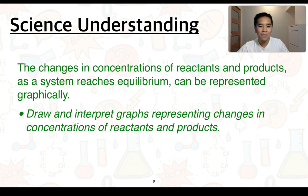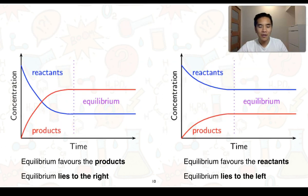Changes in concentrations of reactants and products as a system reaches equilibrium can be represented graphically. We need to know how to draw and interpret graphs showing these changes. We'll also cover how changes to a system at equilibrium can be represented graphically and how to extract information from them. Looking at two different concentration-versus-time graphs, in both cases the system has reached a state of dynamic equilibrium, but both graphs can look a little different.